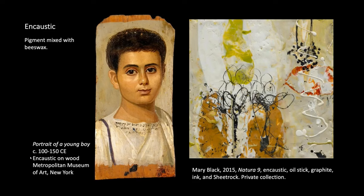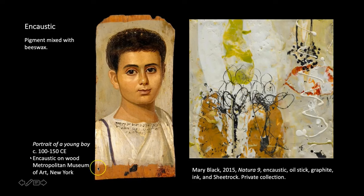The first type is encaustic, which has very ancient roots. It was a very popular method of painting, particularly in Egyptian culture during the era when Egypt was part of Imperial Rome — think Cleopatra and Mark Antony. Encaustic was used especially for these portraits on wood that would actually be placed on a sarcophagus — so it has a funerary intention. You would have the mummified body in the sarcophagus and a wonderful portrait of the person inside, reflecting Greek and Roman influence on Egyptian culture.